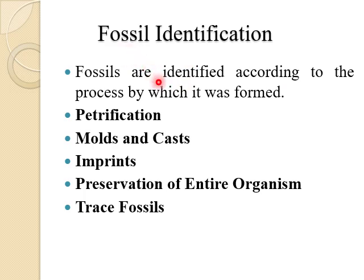Fossils can be identified by the process by which they were formed. There are about five different types of fossil identification and their process of formation. Number one is petrification, number two is molds and casts, number three is imprints, number four is preservation of entire organism, and number five is trace fossils.